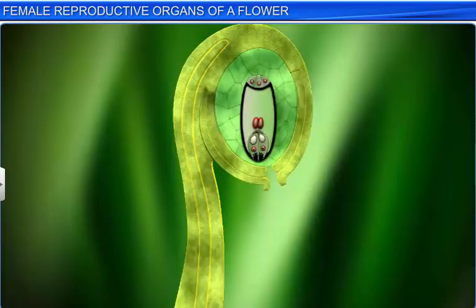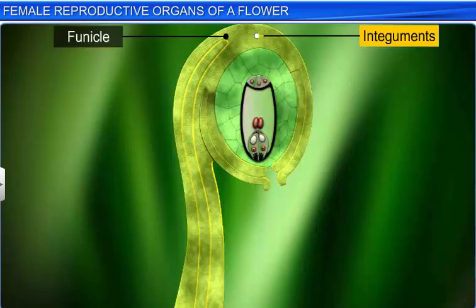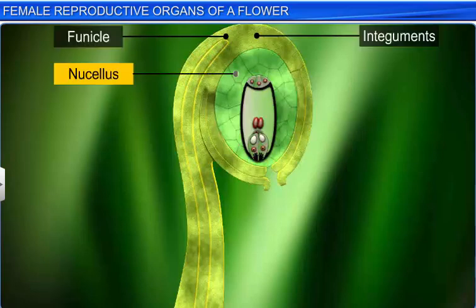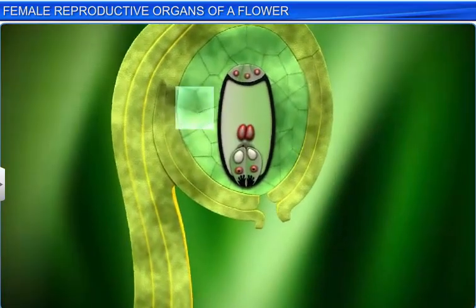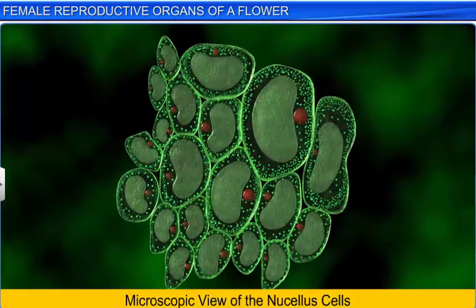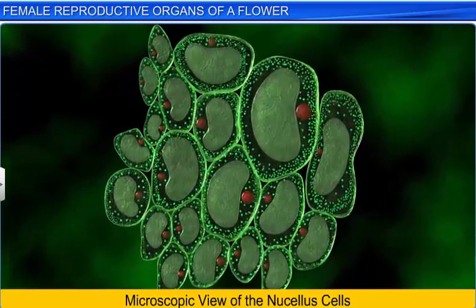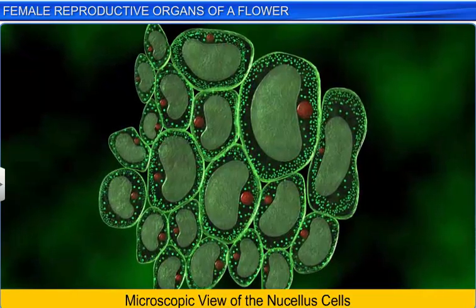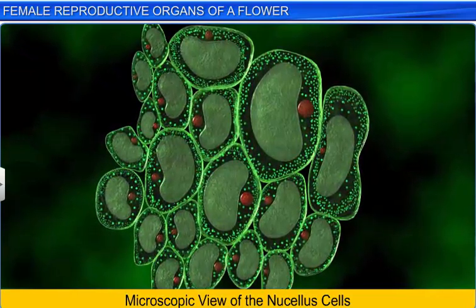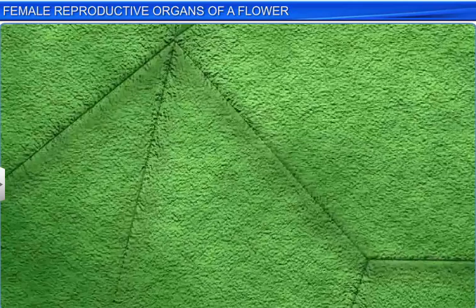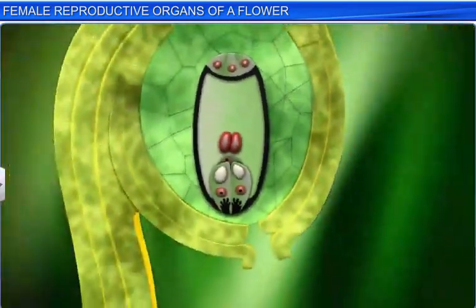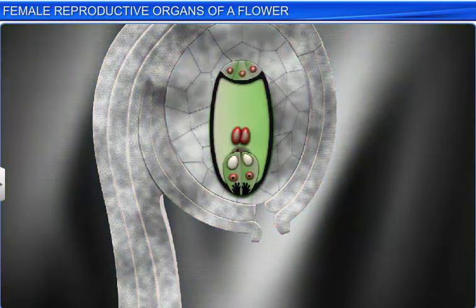While the micropyle forms one end of the ovule, the chalaza forms the basal part. At the chalazal region, the funicle and integuments join the nucellus — the central region of the ovule made of a mass of diploid, colorless, thin-walled parenchymatous cells containing food reserve materials. In the nucellus of a mature ovule lies the embryo sac, the female gametophyte, which develops from a megaspore.